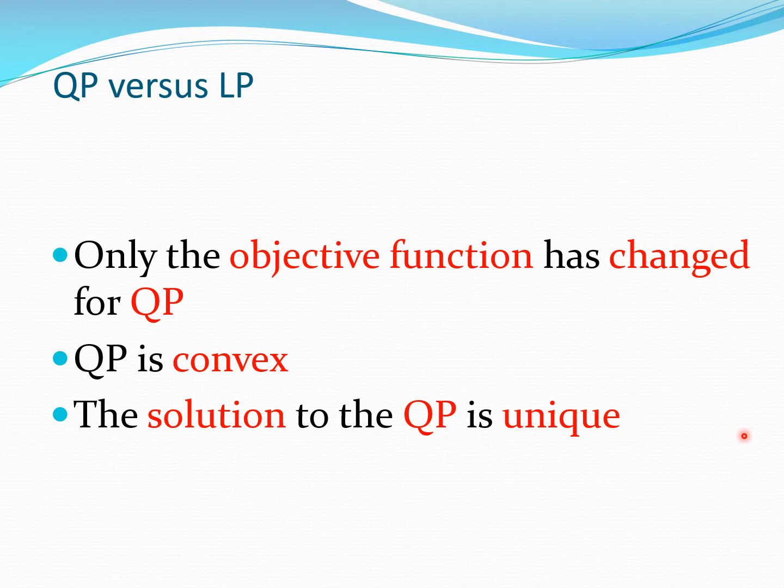Comparing the QP to the linear program, we see that basically the cost function has changed for the QP. The QP retains its convexity as given in the previous slide because both the cost function and the constraints remain convex. The solution to the QP problem is unique because all the functions involved are convex.